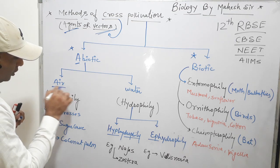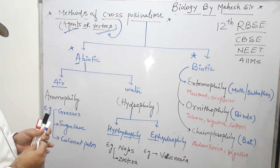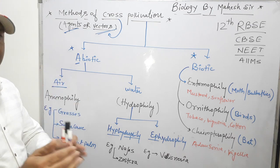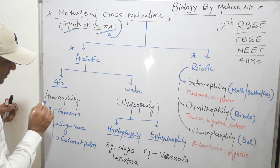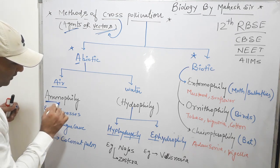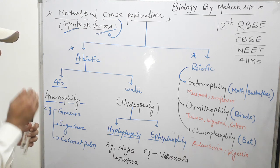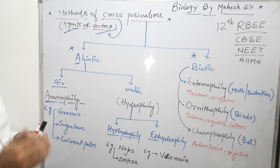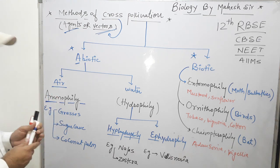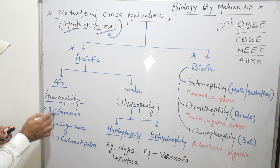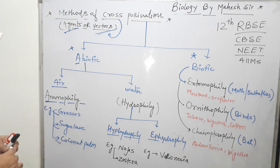When air is involved in cross-pollination and air transfers the pollen grain from the mature anther to the stigma, that process is called anemophily. The term anemophily means the pollen grain travels from the mature anther to the stigma by air. Examples include grasses, sugarcane, and coconut palm.